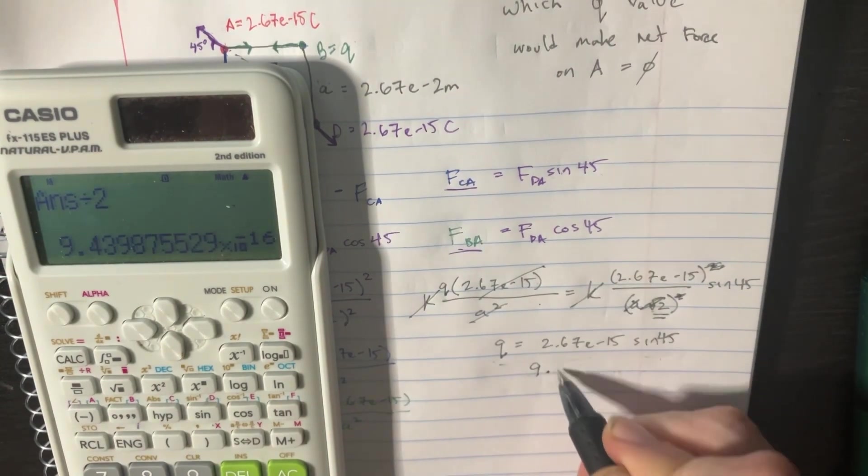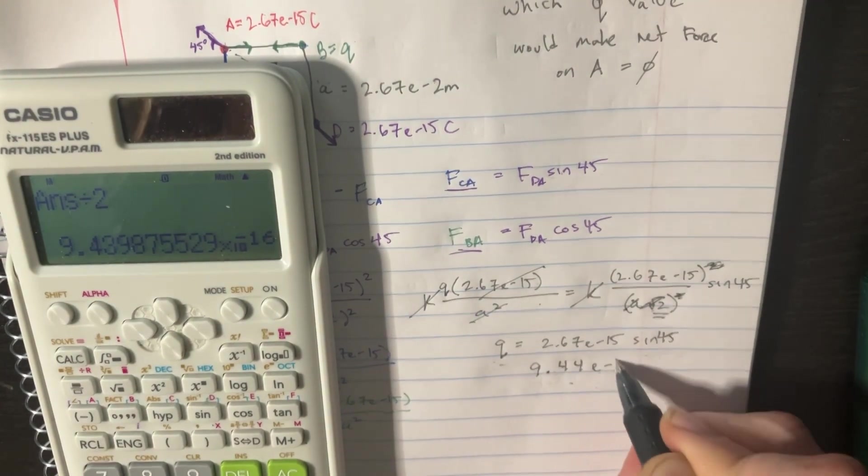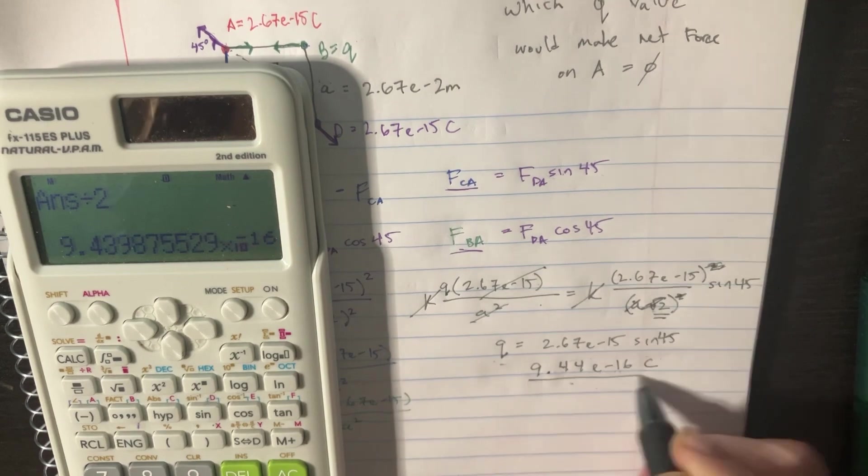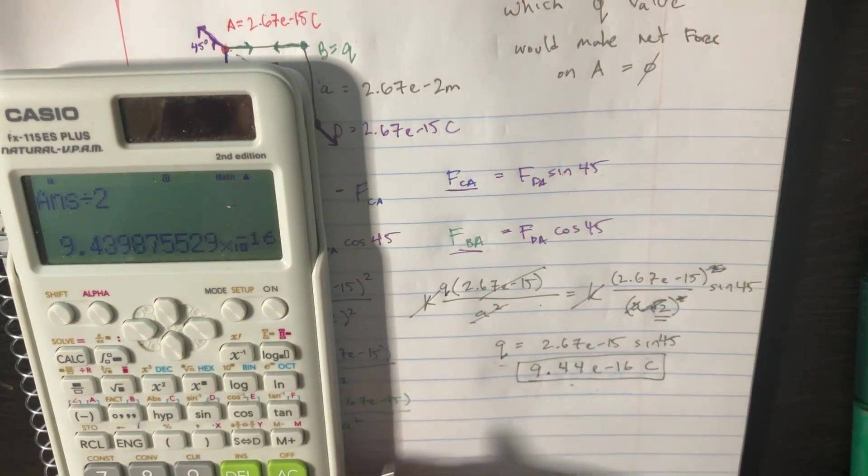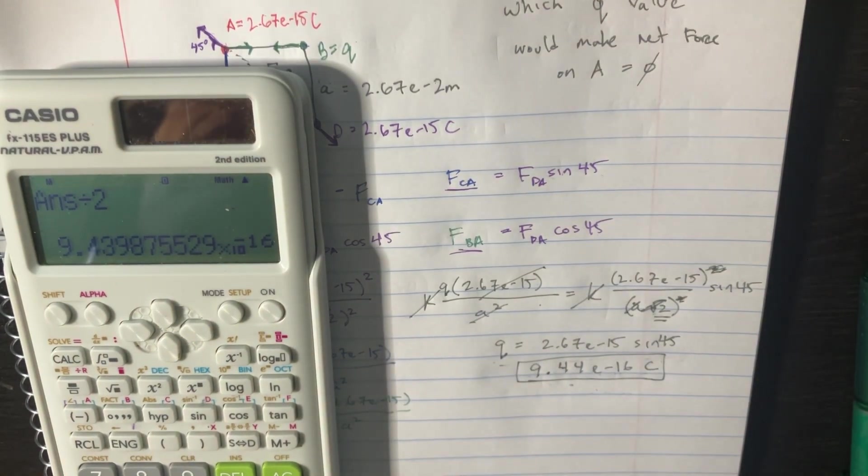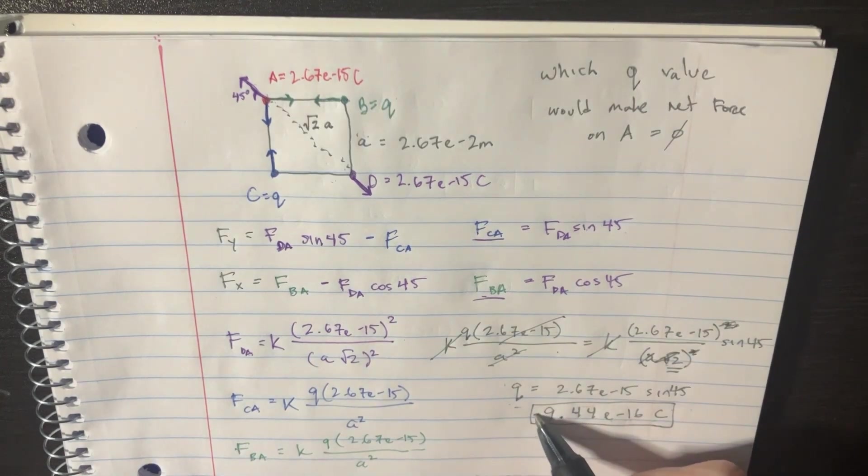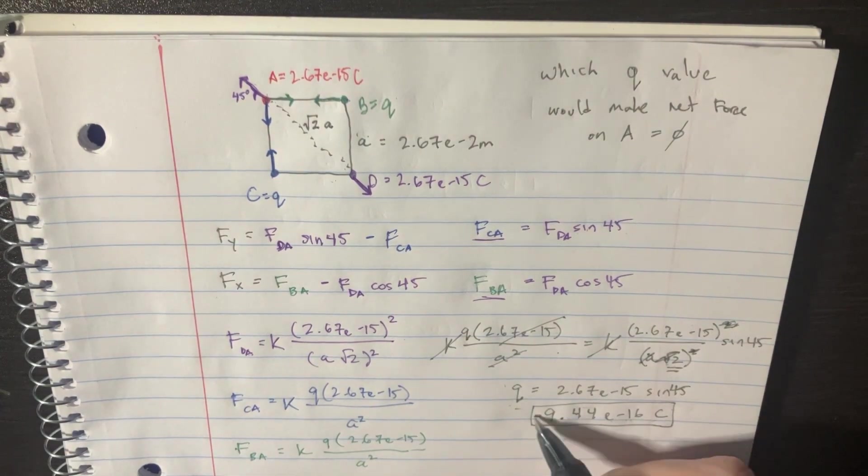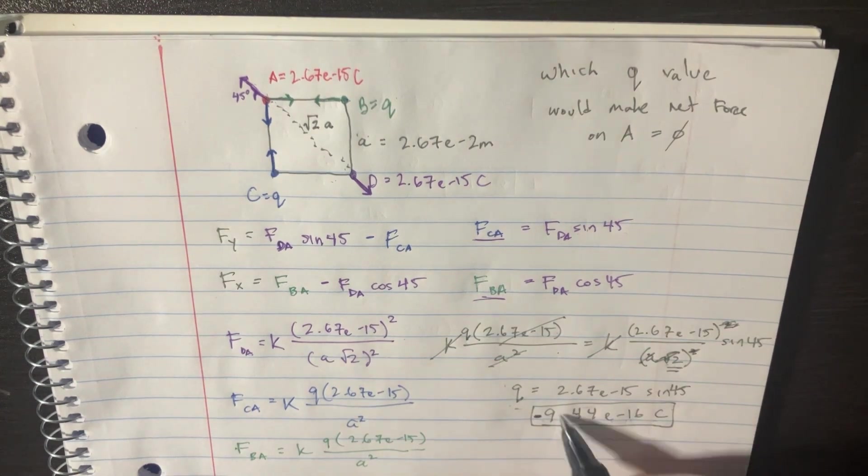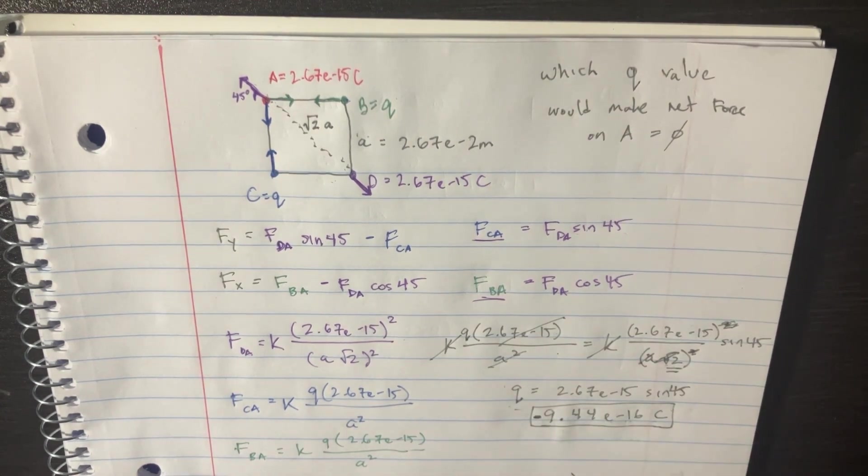So this is 9.44 E to negative 16 Coulombs. And that is the answer for Q. Awesome. One last side note, let's make sure that this sign is negative, otherwise we're going to get this answer incorrect, because Q is supposed to be negative, not positive, otherwise it won't be the right force.